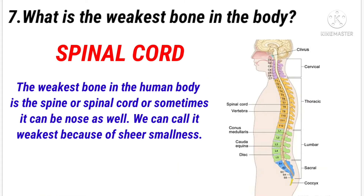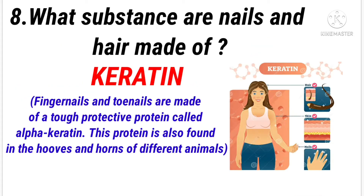What is the weakest bone in the body? Answer: Spinal cord. What substance are nails and hair made of? Answer: Cerebrum.